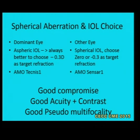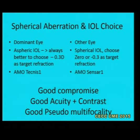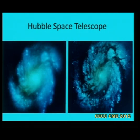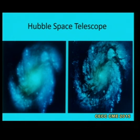Regarding spherical aberration and IOL choice, my usual practice is to implant an aspheric IOL in the distance-dominant eye with about +0.3 diopters target refraction, and a spherical IOL with about −0.3 target refraction in the other eye. This combination gives patients reasonably good contrast sensitivity, good distance and near vision, and a kind of pseudo-multifocality. The Hubble Space Telescope images illustrate this well — when launched it had a calculation error causing significant spherical aberration; after NASA technicians repaired it in space, the image quality and contrast improved dramatically.